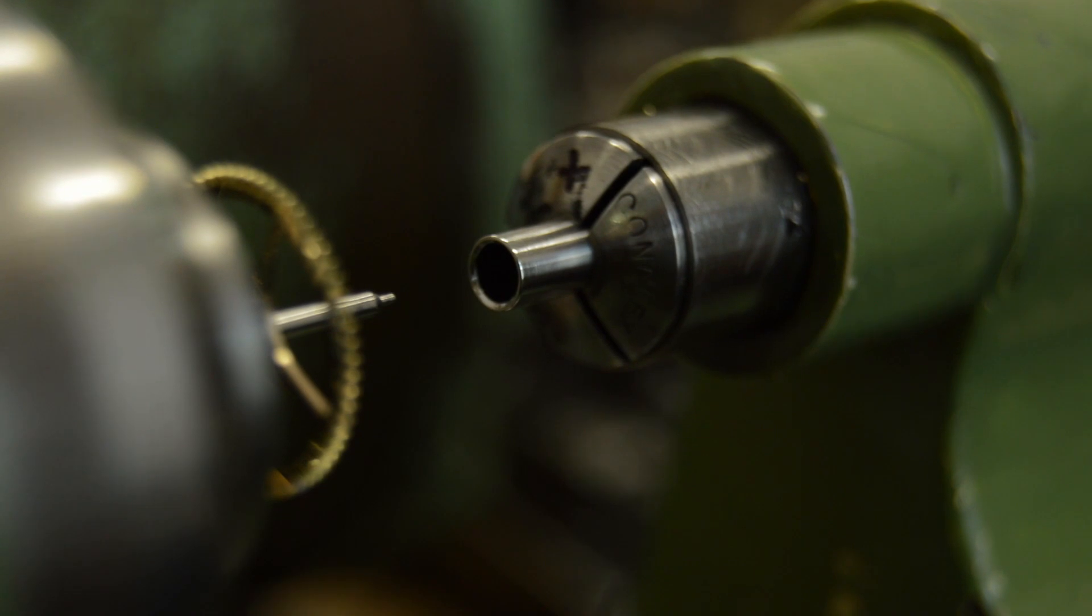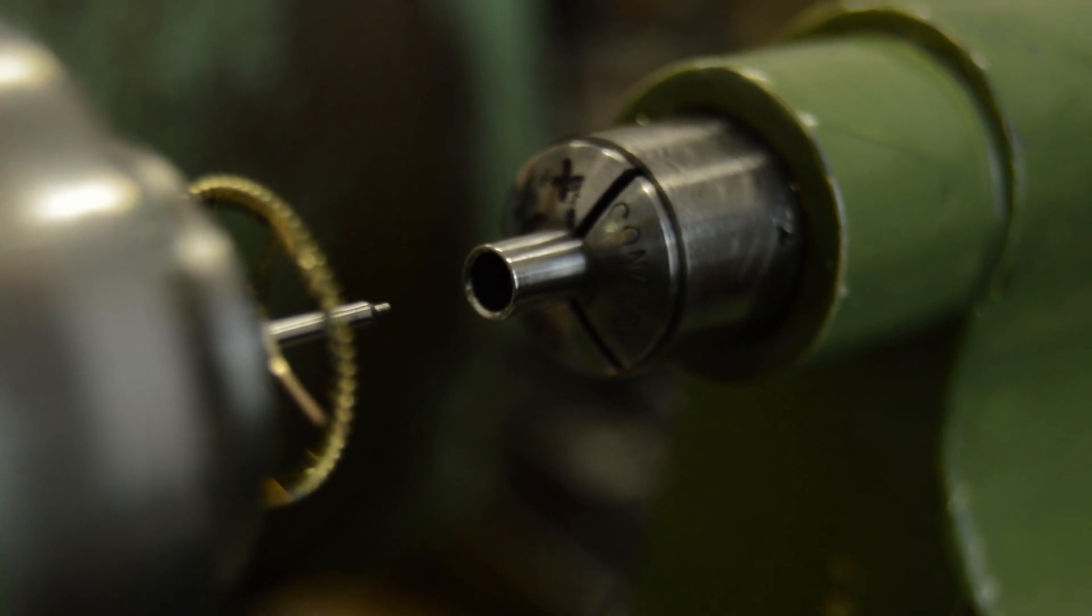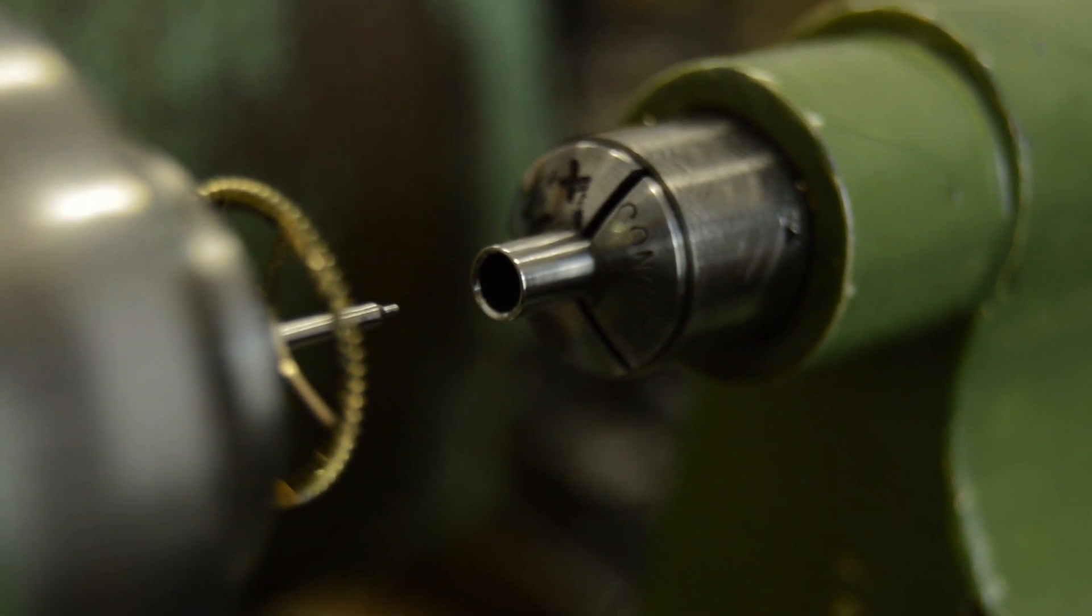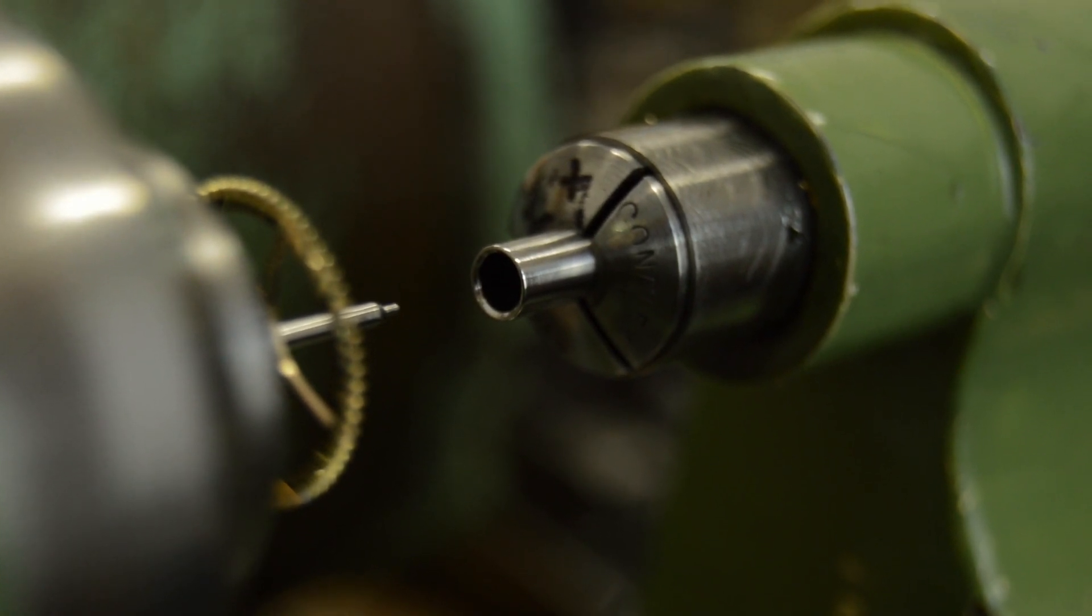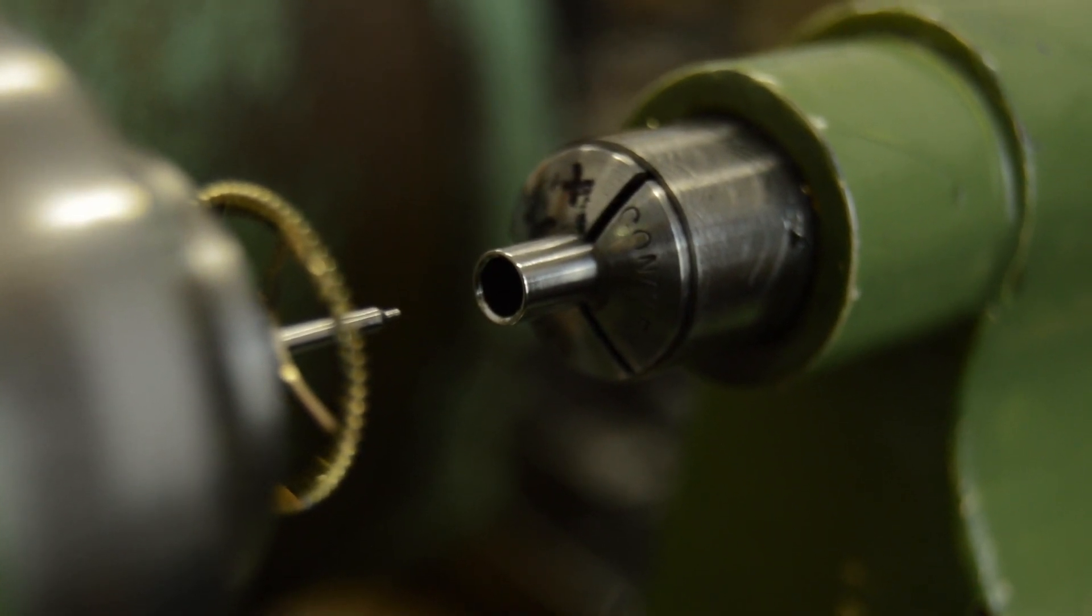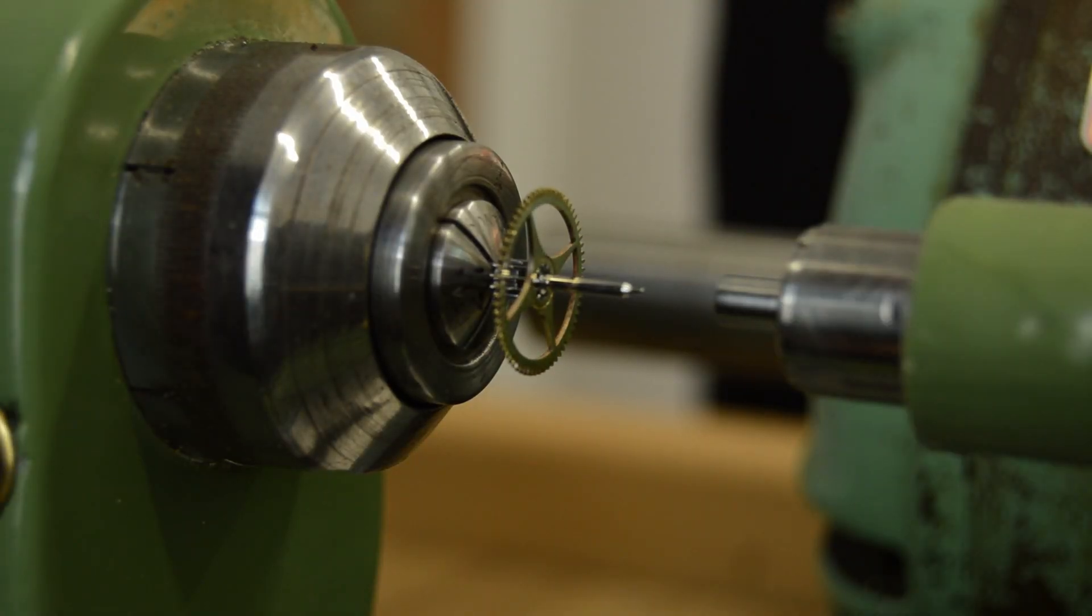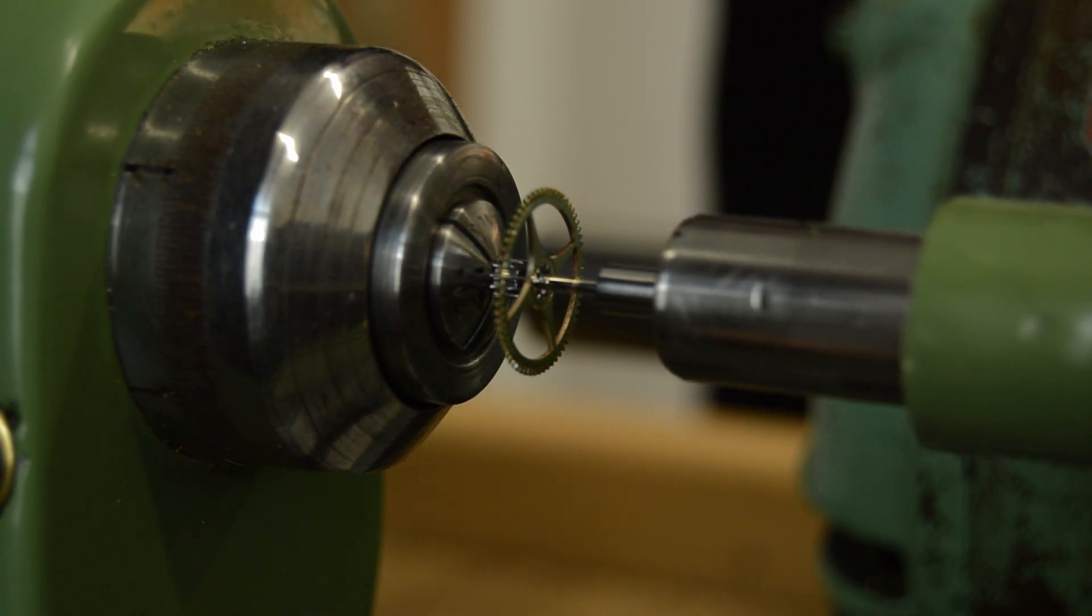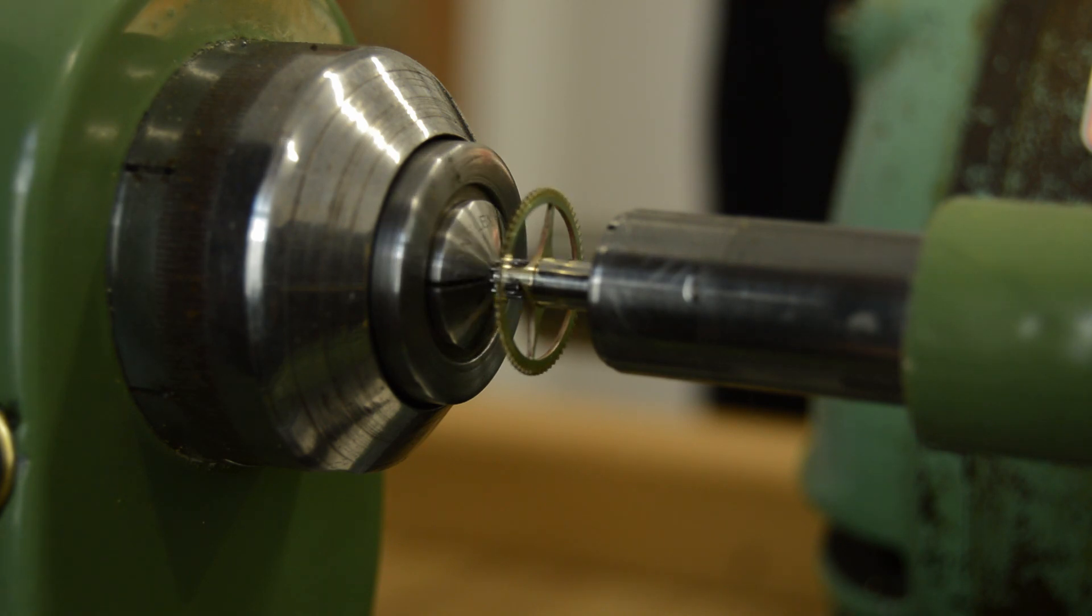OK, so you can just see the end of the riveter there. All it is is a piece of silver steel with a centre hole drilled out and then a slight chamfer. And that's hardened and left dead hard and then polished up. And what I'm going to do is just simply press the riveter up against the wheel while the lathe is rotating.